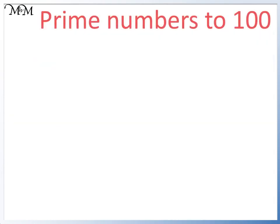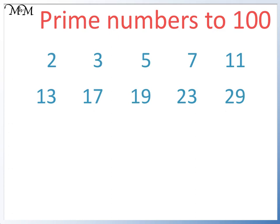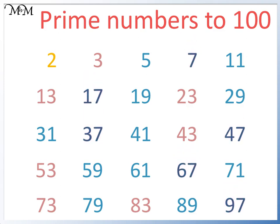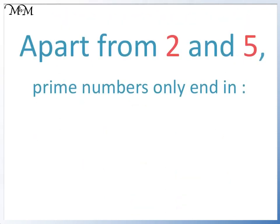The 25 prime numbers to 100 are shown in rows of 5: 2, 3, 5, 7, 11, 13, 17, 19, 23, 29, 31, 37, 41, 43, 47, 53, 59, 61, 67, 71, 73, 79, 83, 89, 97. 2 is our only even prime number, but we can see patterns in the rest of the digits. These numbers end in 3, these end in 7, these end in 1, and these end in 9. 5 is the only prime that ends in 5. Apart from 2 and 5, prime numbers only end in 1, 3, 7, or 9.